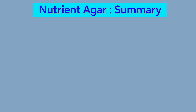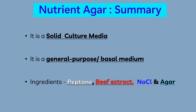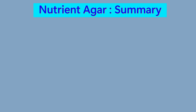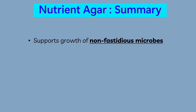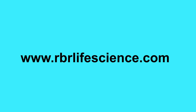Now let's quickly summarize what we learned. Nutrient agar is a solid culture media. It is a general purpose medium, also known as basal medium. It contains ingredients such as peptone, beef extract, sodium chloride and agar. Nutrient agar supports the growth of non-fastidious microorganisms. Nutrient agar medium is routinely used for the cultivation, maintenance and enumeration of microbial cultures.